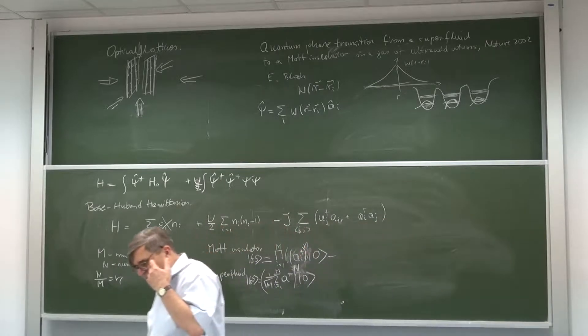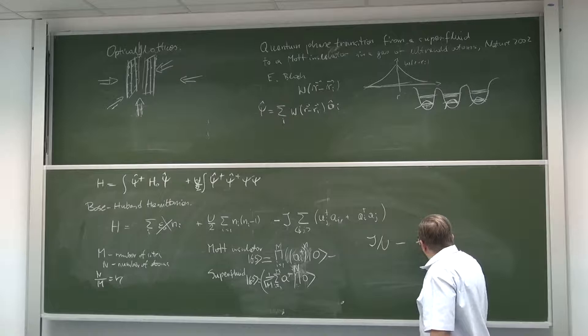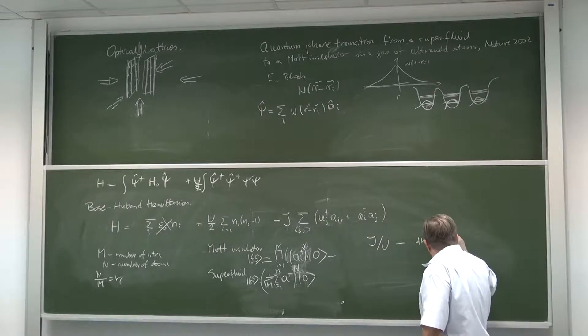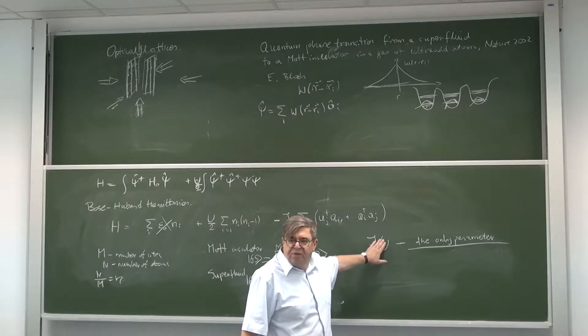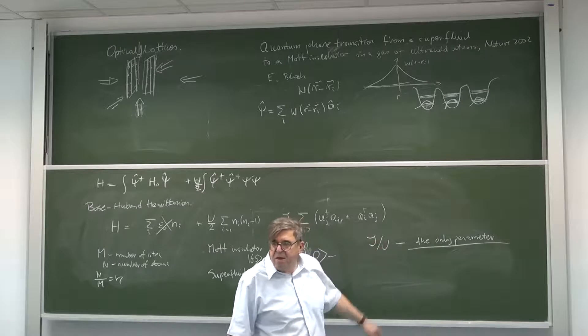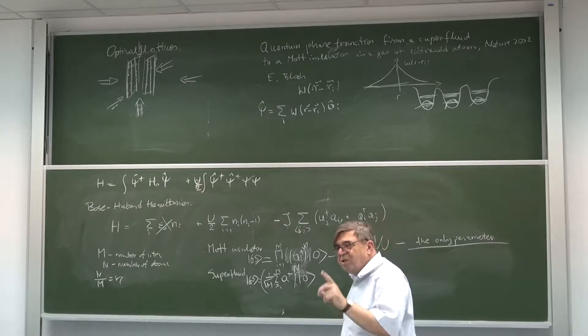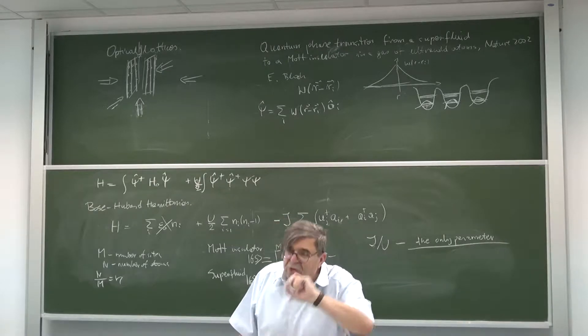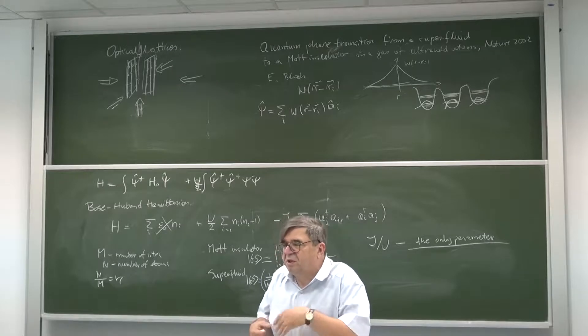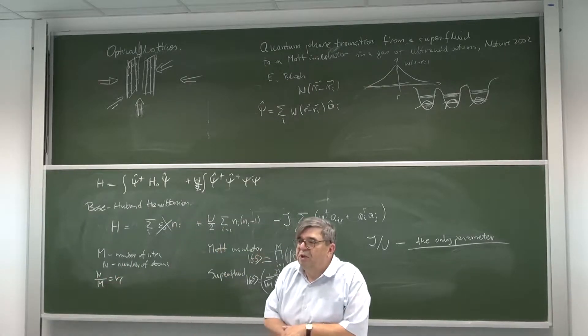This is superfluid state. So there are two opposite cases and everything depends on the parameter J over U, which is the only parameter in this Hamiltonian. If J/U is very small we have Mott, and then when this becomes large, at some moment you have quantum phase transition. Zero temperature phase transition between two different ground states of the Hamiltonian, two different phases. These are quantum fluctuations who are driving this transition. They are not thermal fluctuations but quantum fluctuations, which you know something has to initiate this transition and the system will recognize that it wants to be in the superfluid phase.